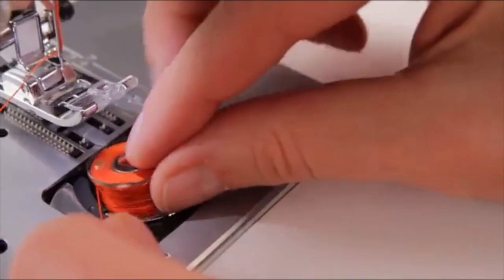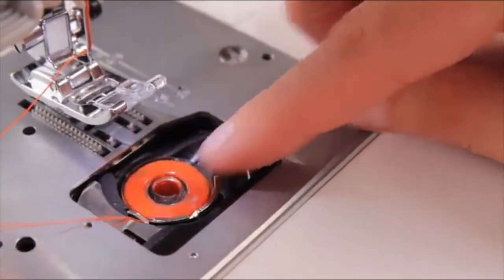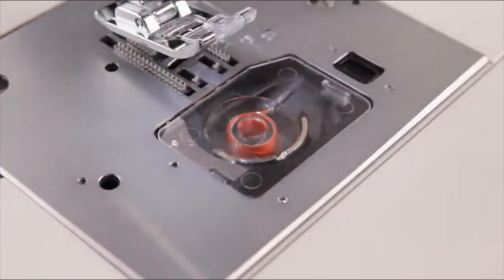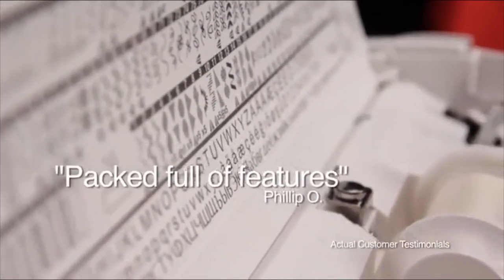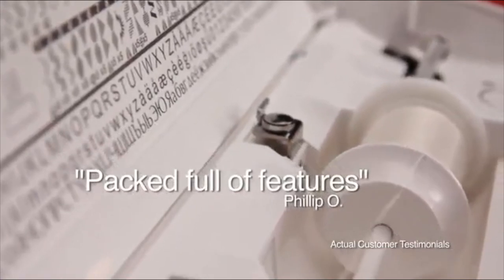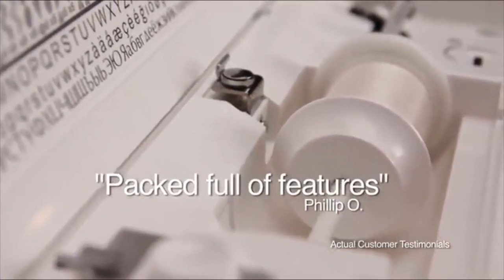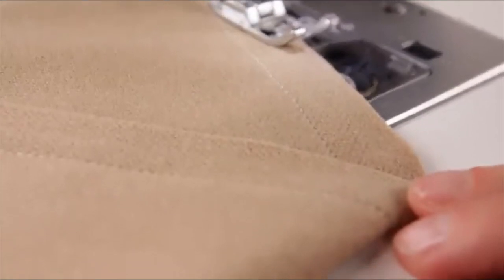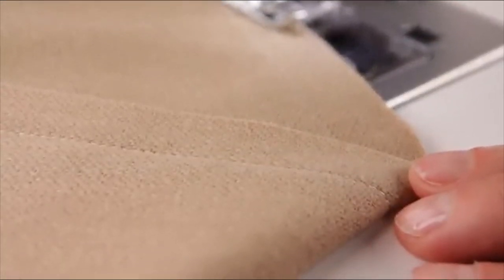The top drop-in bobbin is easy to insert. The clear cover allows you to monitor the thread supply as you go. This machine is easy to use and packed full of features. I love the automatic thread tension and I've never had to adjust it. The auto-tension system ensures stable stitch quality, regardless of which fabric type you want to sew.